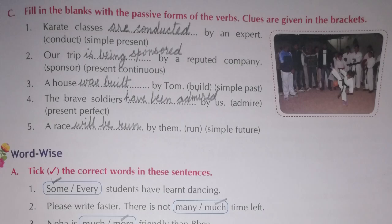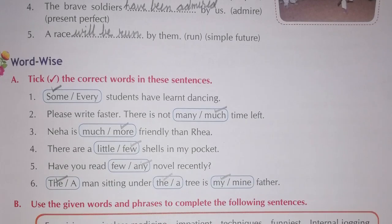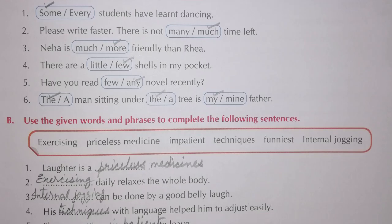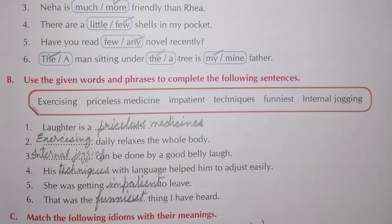Now Word Wise is given. Part A: tick the correct words in these sentences — first answer: 'some,' second: 'much,' third: 'more,' fourth: 'few,' fifth: 'any,' sixth: 'the' or 'my' according to the sentence. Part B: use the given words and phrases to complete the following sentences — first: 'priceless medicines,' second: 'exercising,' third: 'internal jogging,' fourth: 'techniques,' fifth: 'impatience,' sixth: 'funniest.'